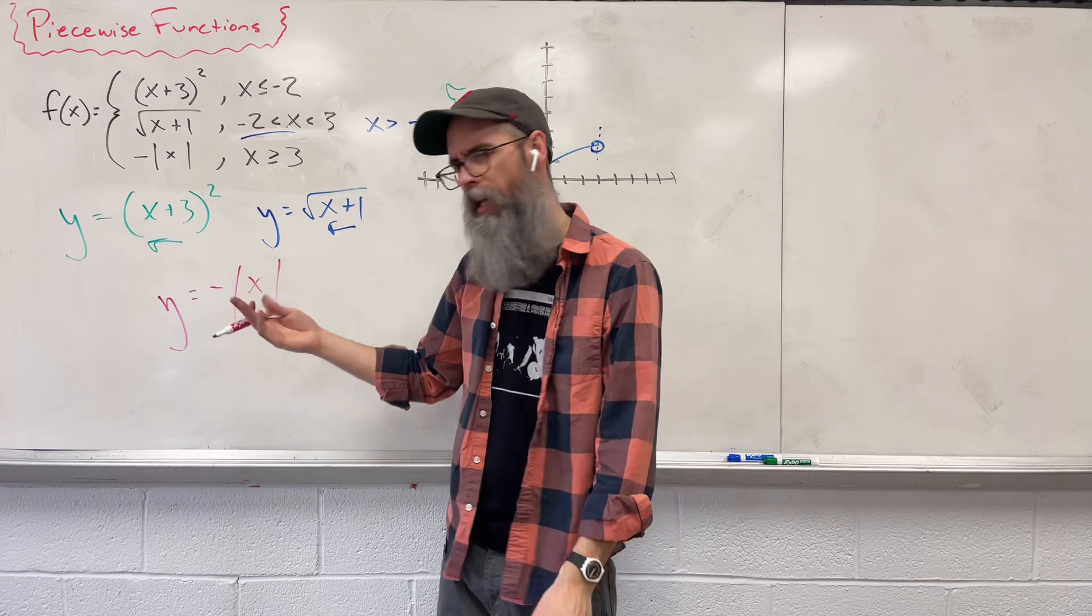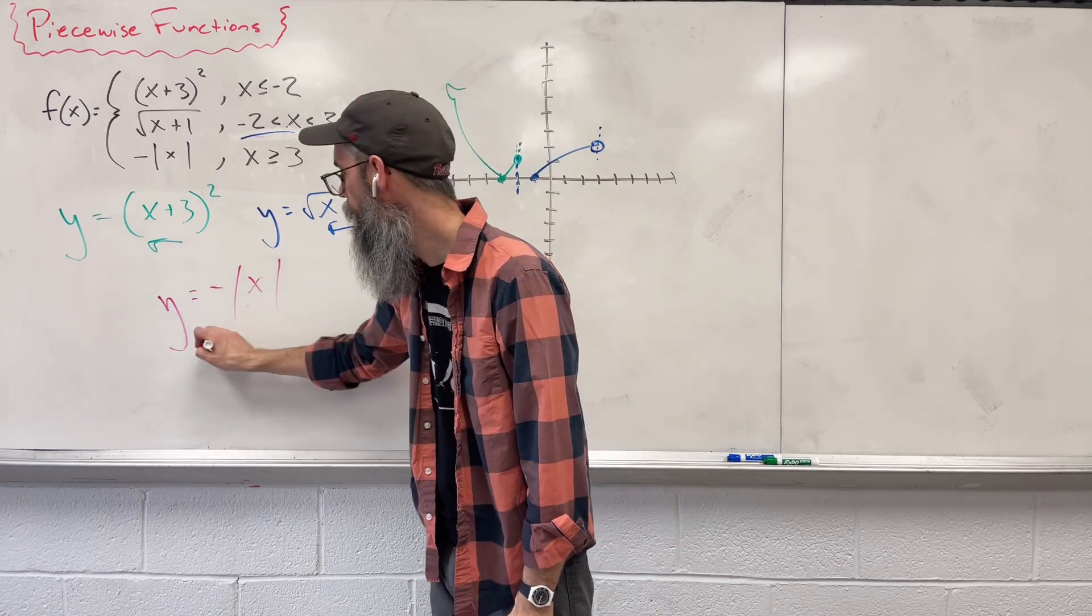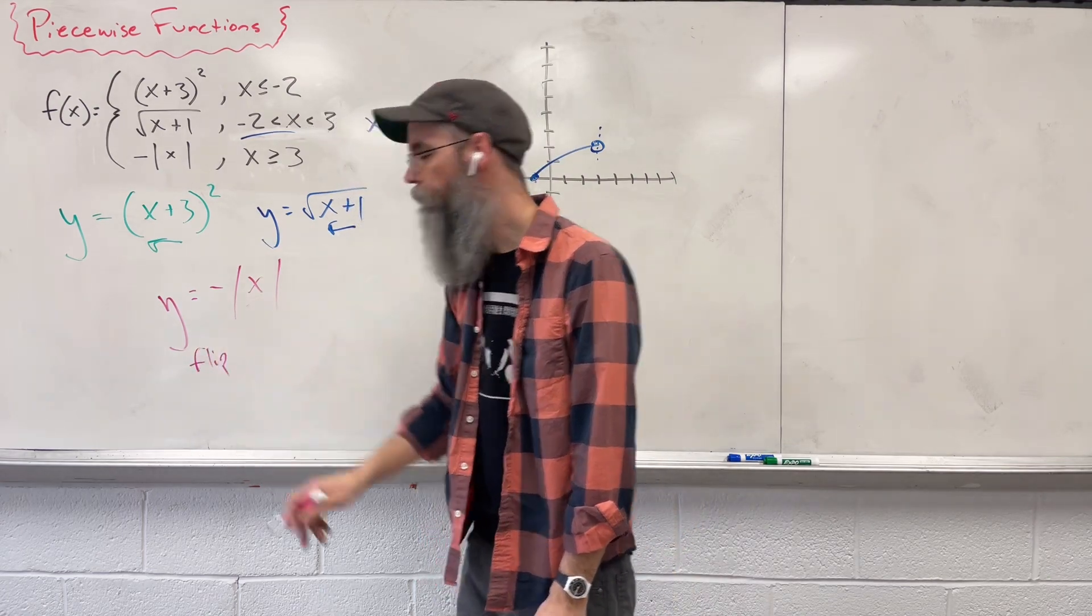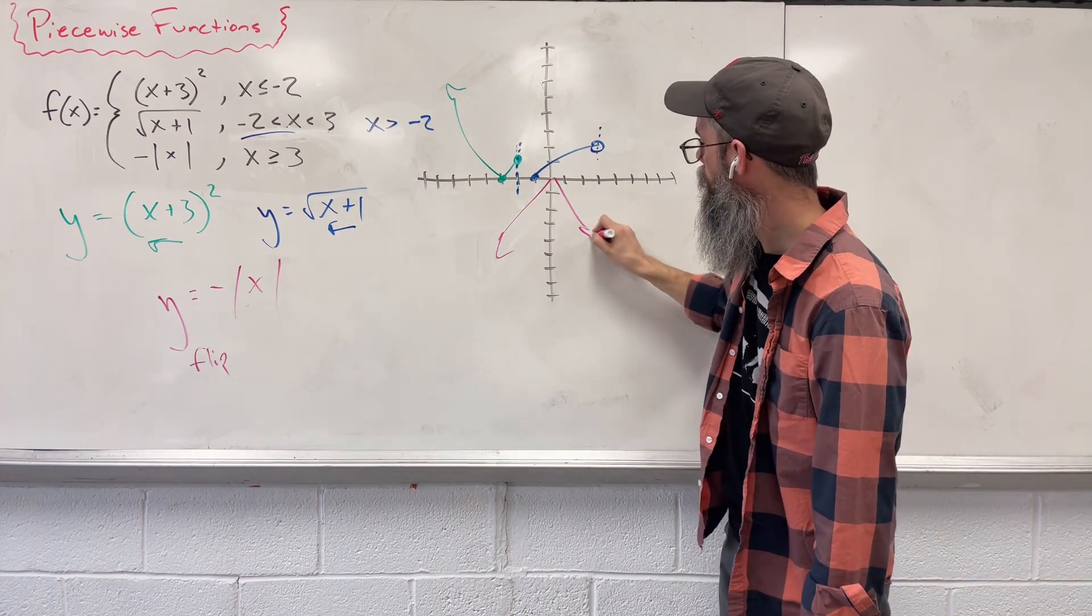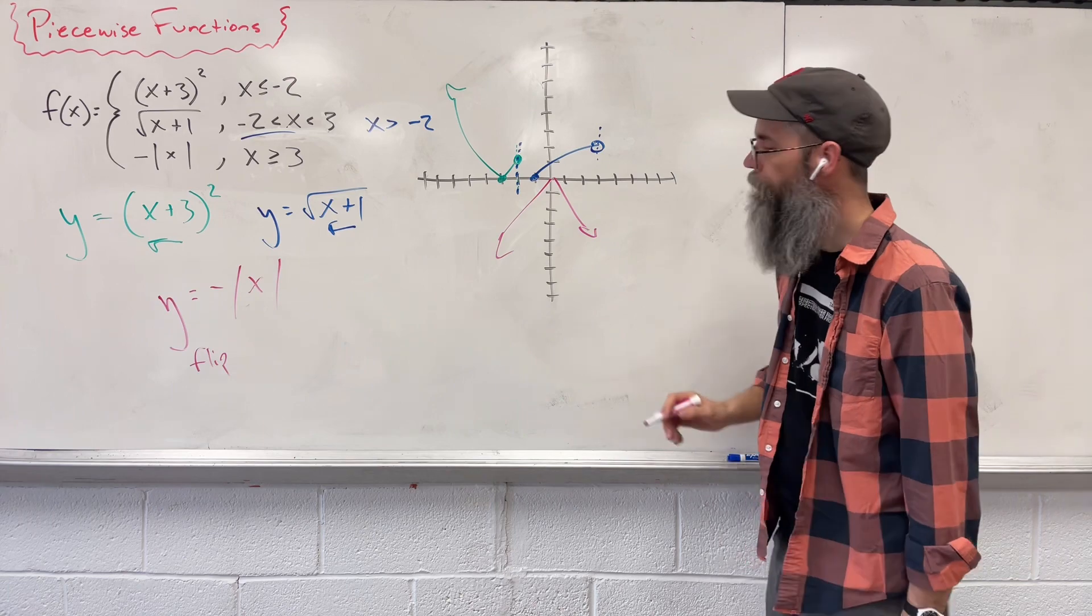Instead, we only have something in front, which ends up flipping our whole graph. So that little negative sign flips our regular v. That v starts at the origin. And we get that.